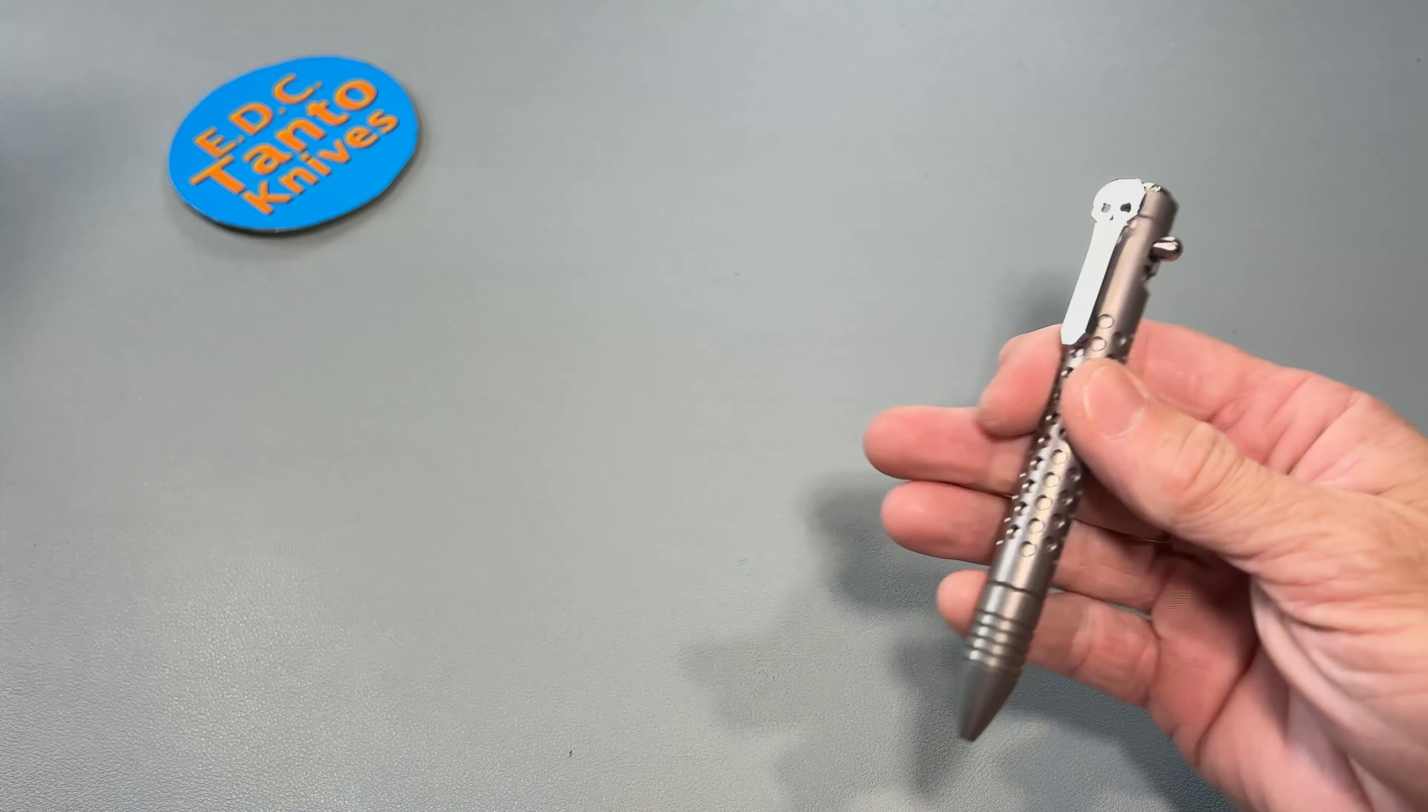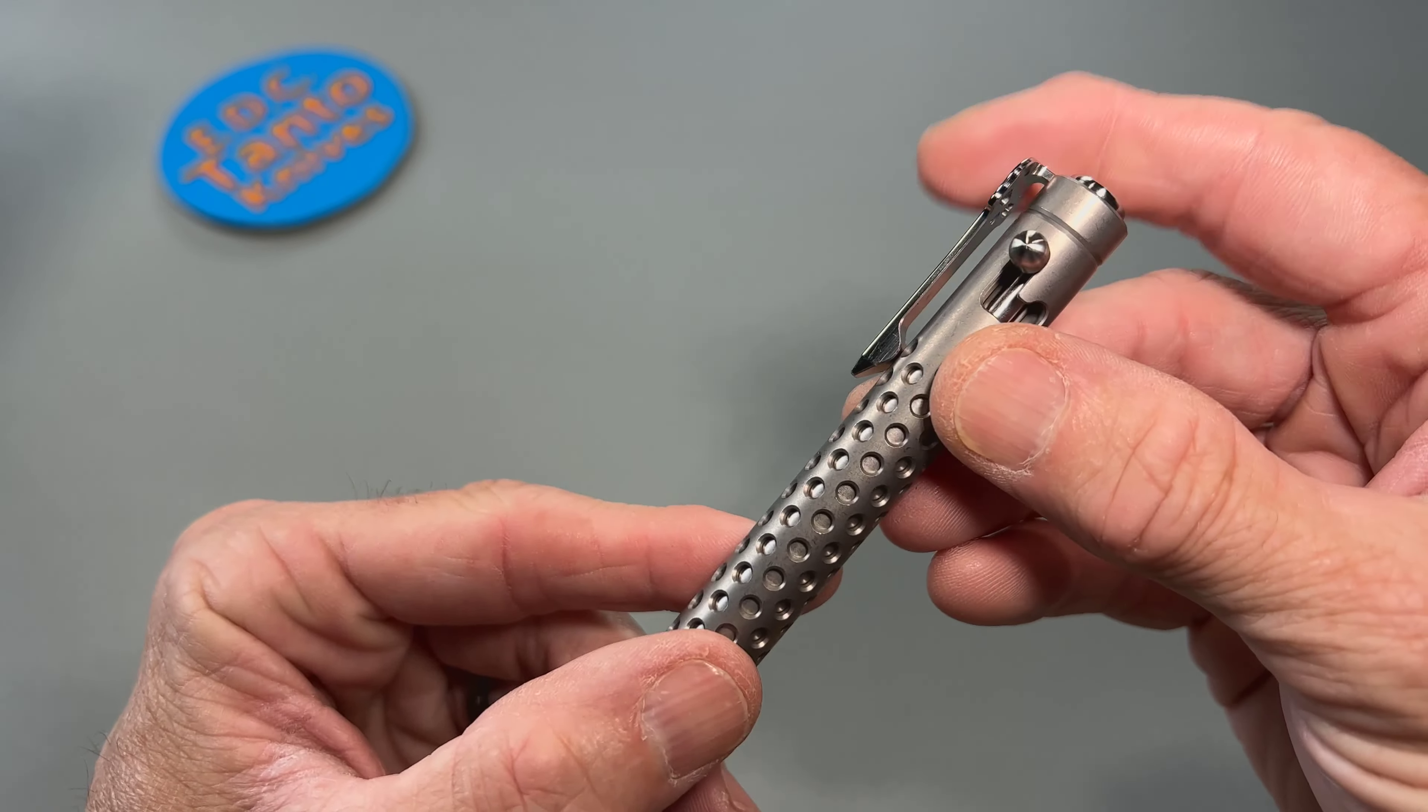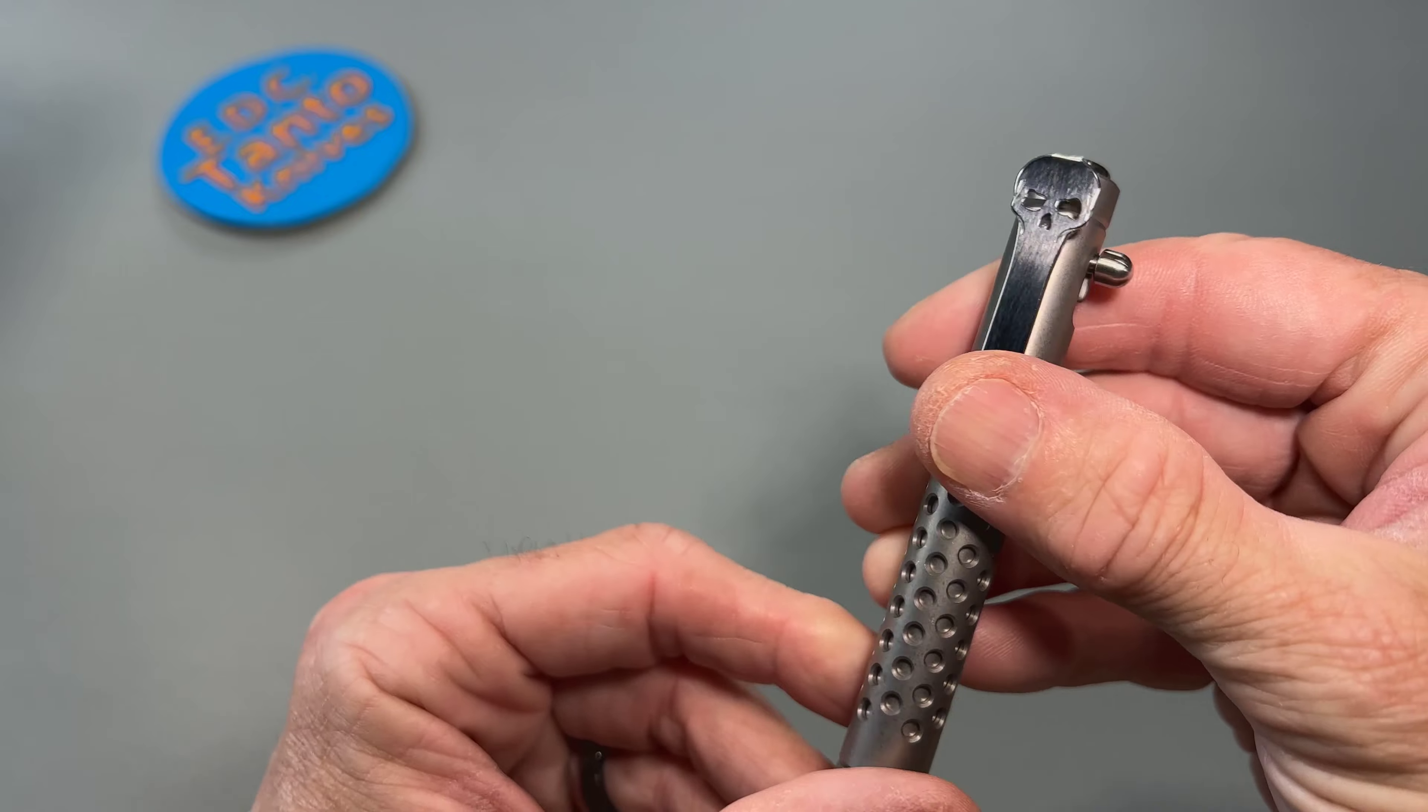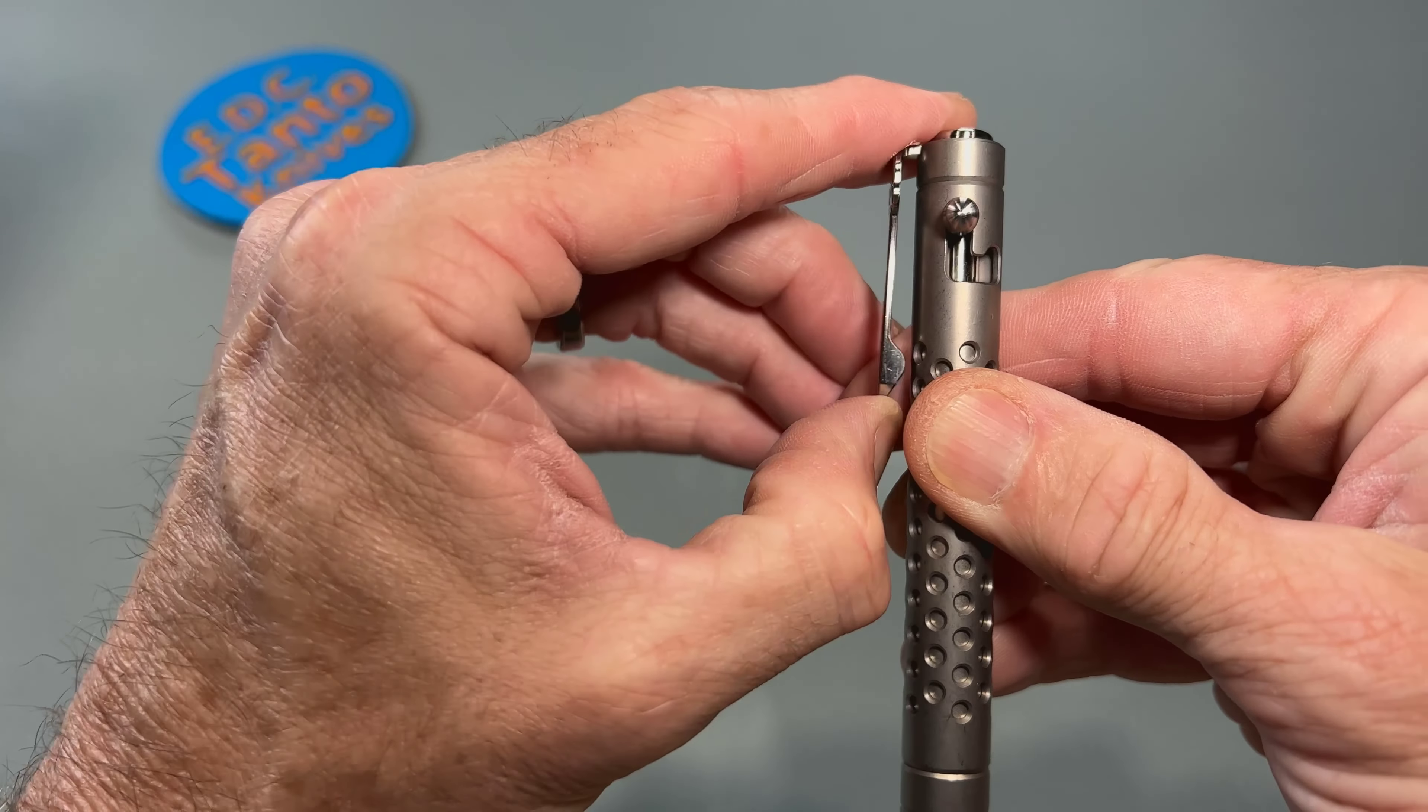So there we go, there's a typical Chavez skull clip which he also does on his knives. Some people like it, some people don't. I don't really care for it on his knife but here on the pen, it's not quite so bad. It's very unique let's put it that way, and it's got some pretty good retention and is very deep carry, so that is pretty cool too.